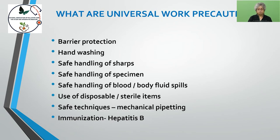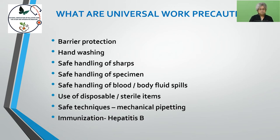Universal work precautions include: first, barrier precautions — a healthcare worker, volunteer, or paramedic should wear a protective gown, gloves, cap, and mask. Second is hand washing. Third is safe handling of sharps — if sharp instruments like needles or knives are used on a patient, handle them carefully to avoid injuring yourself.